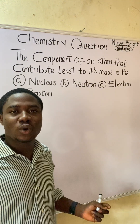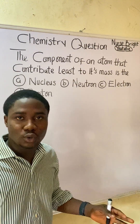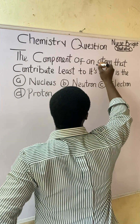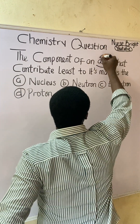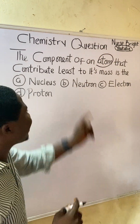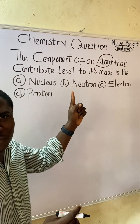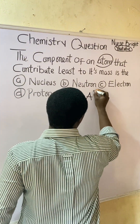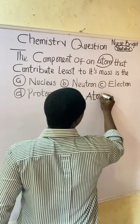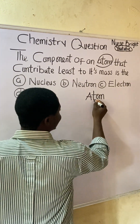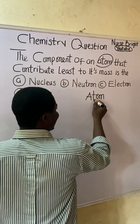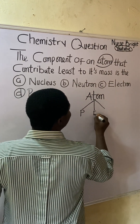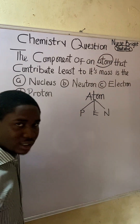This question is extremely very easy. We have to understand that an atom is made up of different components — three important subatomic particles. I call them PEN: protons, electrons, and neutrons.